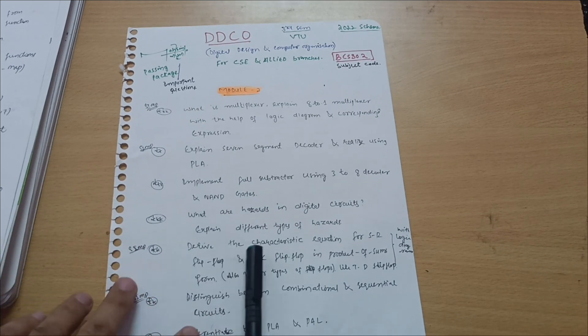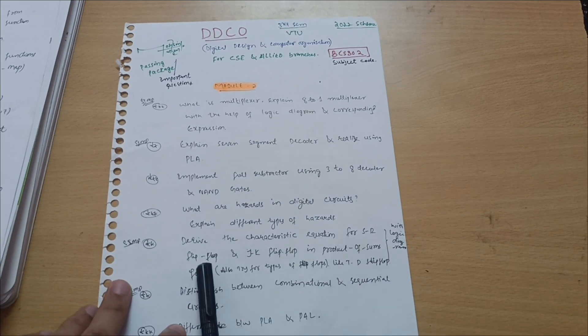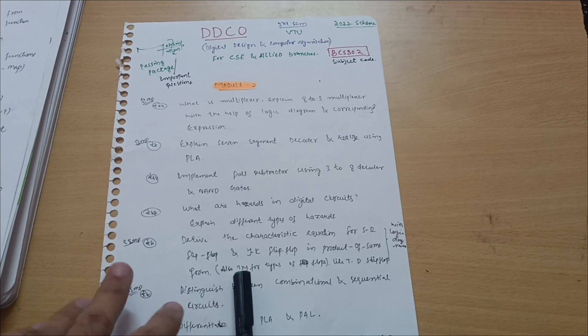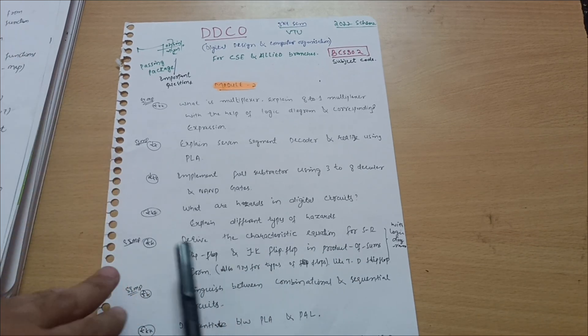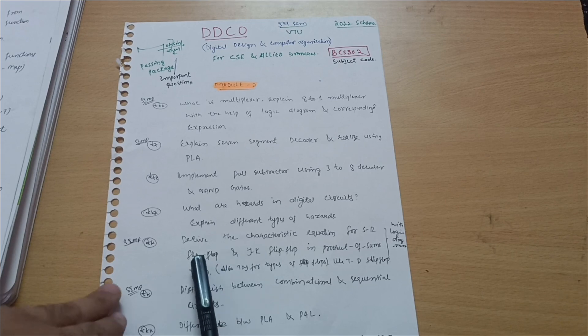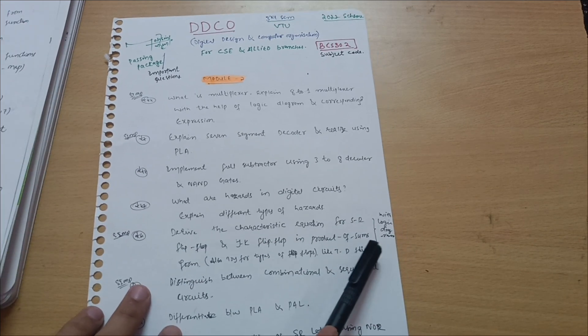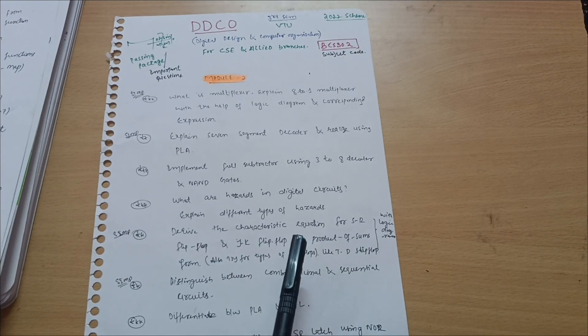Next is the most important one which is frequently asked in the VTU examination: Derive the characteristic equation for SR flip flop and JK flip flop in product of sums form. You should go through other flip flops but this one is the most important one as VTU is asking this question since 18 scheme itself. With the logic diagram you should remember. Diagrammatic part is important.